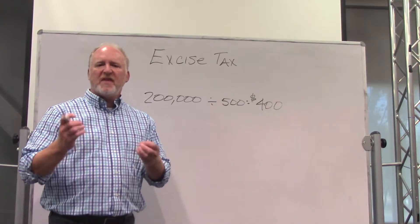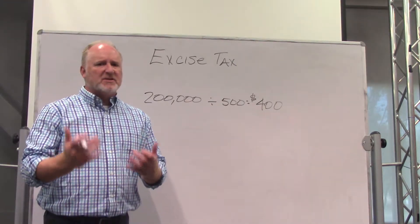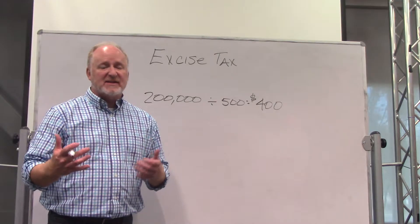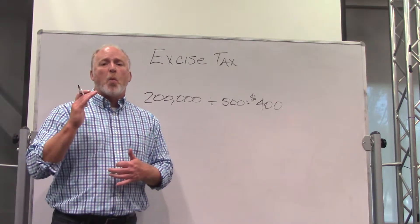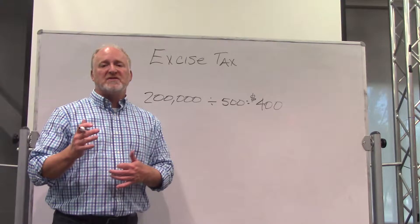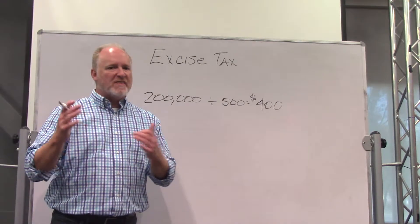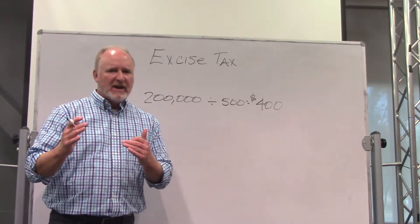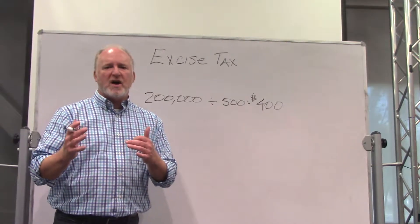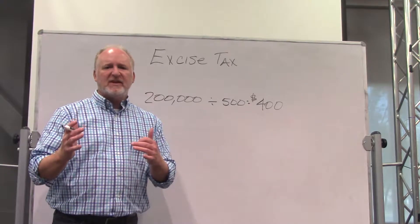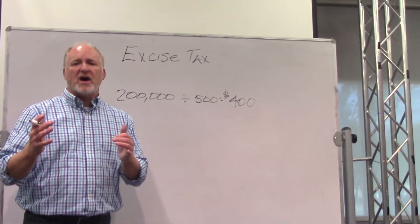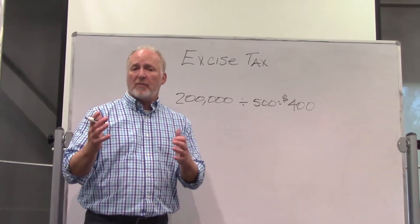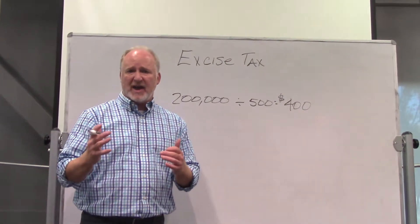Nothing can be completely simple. Technically, excise tax is charged at $1 per $500 of sale price or any portion thereof. What we mean by any portion thereof is if it's not evenly divisible by $500, we're going to have to round up. You always round up when it comes to excise tax.